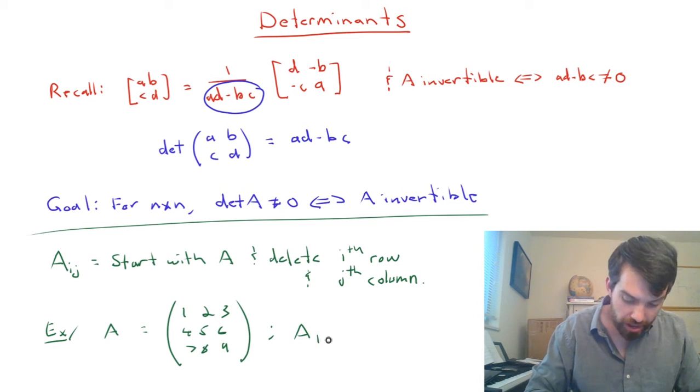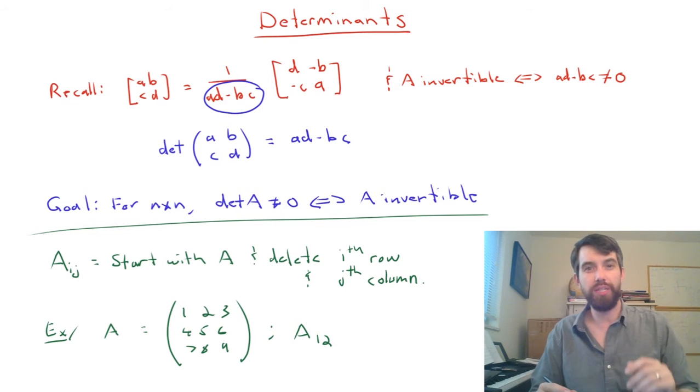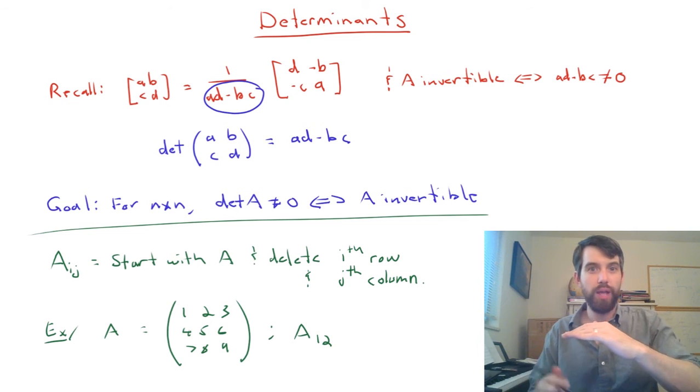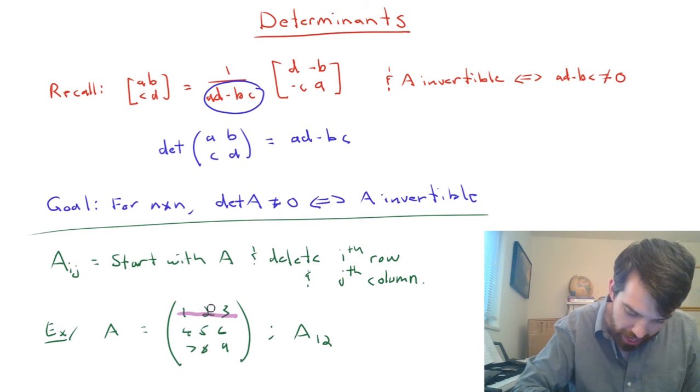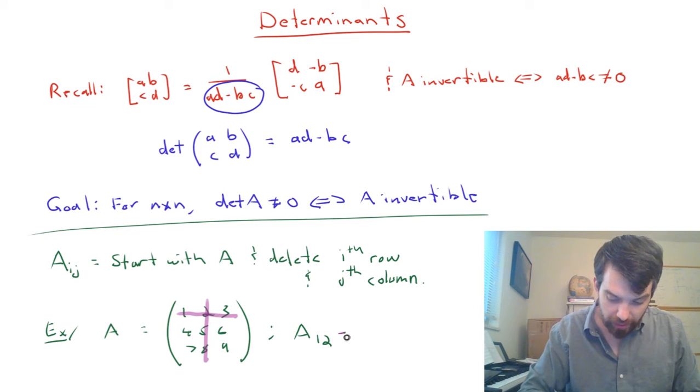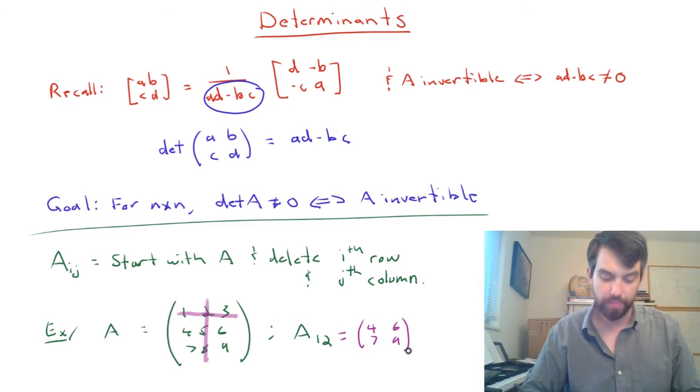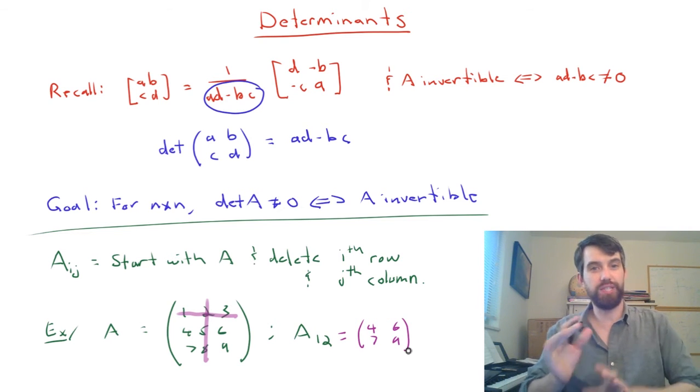Then if I want to look at, say, A_12, what I'm doing here is deleting the first row and the second column. So I'm getting rid of this row entirely, and I'm getting rid of that column entirely. And so what I'm just going to be left with then is the matrix 4, 7, 6, 9. So this is just a quick way to be able to identify these sub-matrices.